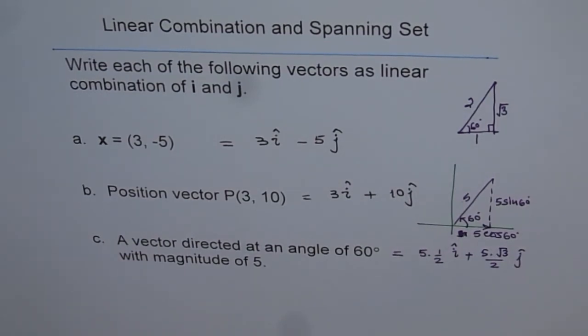So that is how you can represent this vector as a linear combination of i and j. I hope now you understand how we can write every coordinate in R2 or every vector in R2 as a linear combination of i and j vectors. And therefore we say that i and j forms spanning set for R2. Thank you.